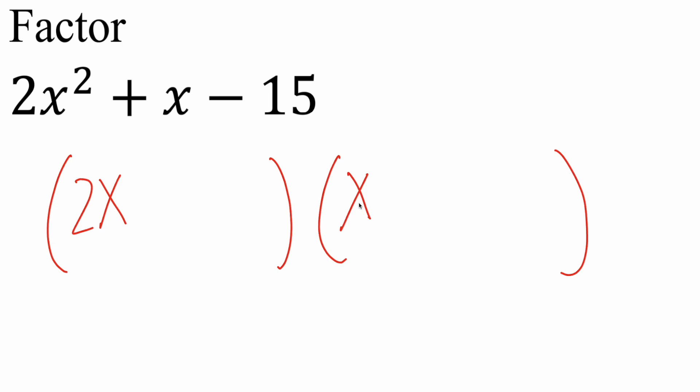And now for the trial and error. So we think to ourselves, how can we get negative 15 by multiplication? 1 and negative 15 and the reverse, 3 and negative 5 and the reverse, reverse meaning 5 and negative 3.